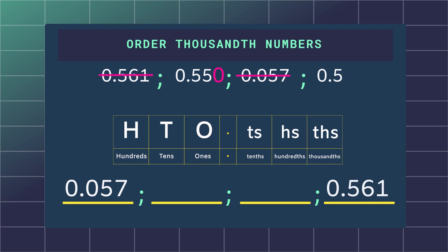So now we can see that 0.561 will be the largest number because of the 1 in the thousandths place. The correct order of these decimals will look like this.